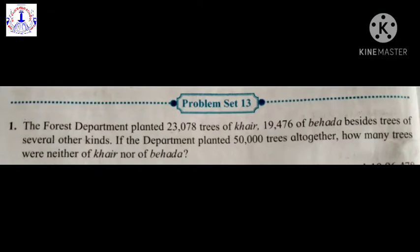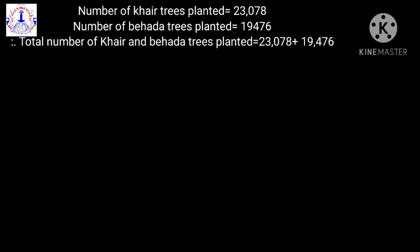First we have to add the number of Kher trees and Behera trees, and then whatever answer we get, we have to subtract it from the total number of trees. Write down in your notebook: number of Kher trees planted = 23,078; number of Behera trees planted = 19,476.